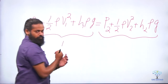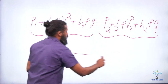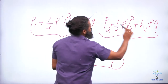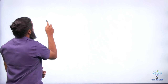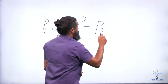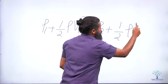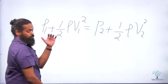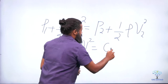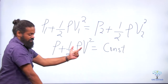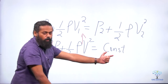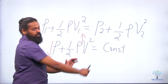For a horizontal pipe, H1 equals H2, so those terms cancel, giving the simplified form: P1 + ½ρV1² = P2 + ½ρV2², or simply P + ½ρV² = constant. This tells us that when velocity increases, pressure must go down so that the sum remains constant.